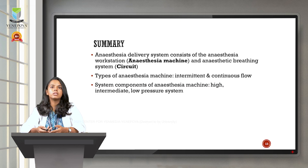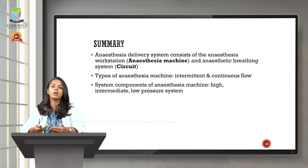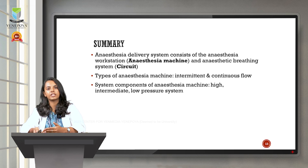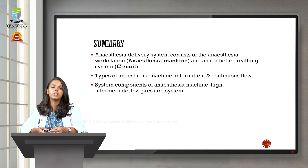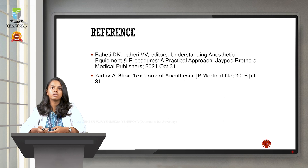In summary: the anesthesia delivery system consists of the anesthesia workstation and the anesthetic breathing circuit. There are two types of anesthesia machines — intermittent and continuous flow. In the intermittent machine, gas flow occurs only during inspiration; in the continuous flow machine, gas flow occurs during both inspiration and expiration. The components of the anesthesia machine are divided into three pressure systems: high pressure system, intermediate pressure system, and low pressure system.